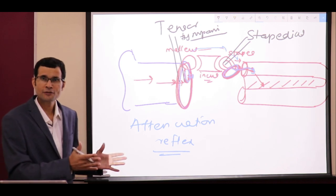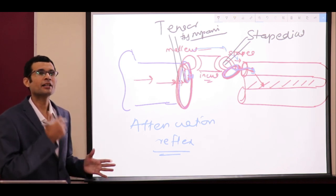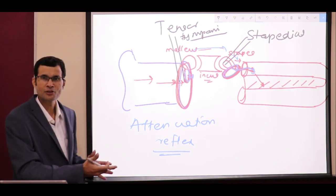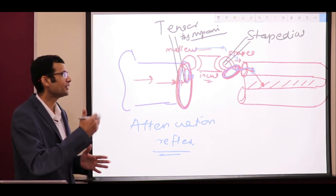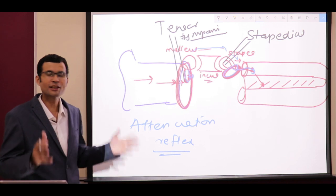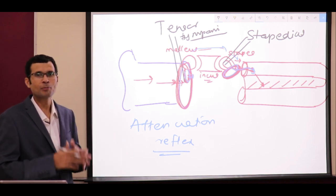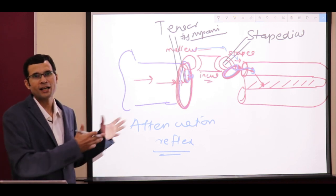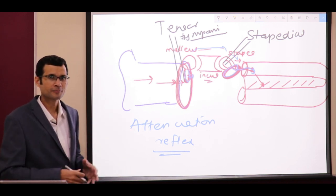So to summarize: transmission of sound, enhanced transmission of sound, and depressed transmission of sound — all three functions are performed by our middle ear.